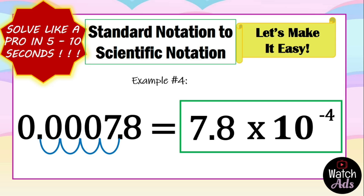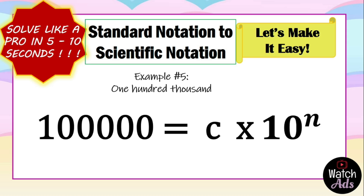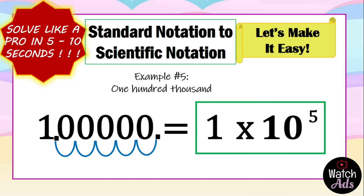Now, what if our example is in words — one hundred thousand? We write it into standard notation: 100,000. To find its scientific notation, since the given standard notation is greater than one, we just count the number of zeros — that will be our exponent. We can skip the other steps. We have five zeros, and the number is one — the only non-zero digit. Our final answer: one times ten raised to five.